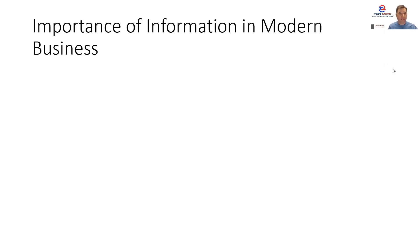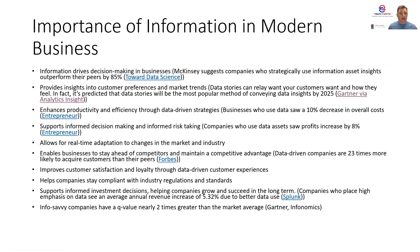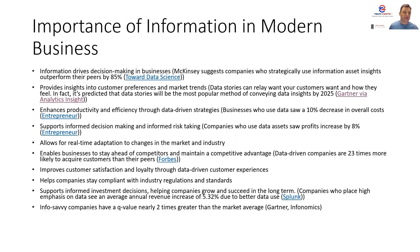If we discuss the importance of information in modern business and managing these assets, here are some stats: companies that use information assets will typically outperform their peers by 85%. Additionally, businesses that leverage their technology for these information assets and improve their processes will usually decrease their overall costs by about 10%. Also, data-driven companies are 23 times more likely to acquire customers than their peers. And investors are taking note — companies that are info-savvy will typically have a Q value of nearly two times greater than the market average.